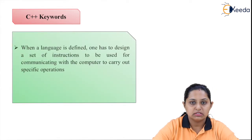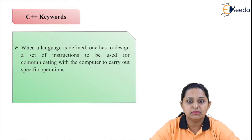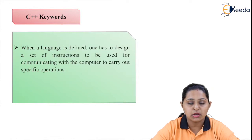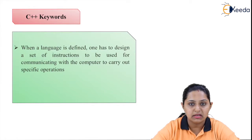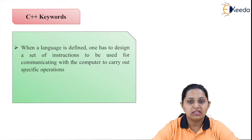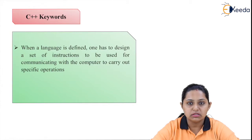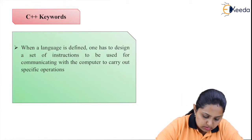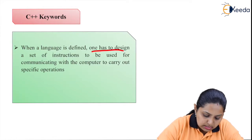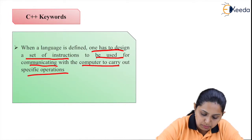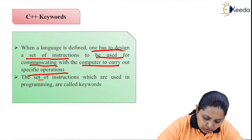Basically, what do you mean by Keywords? Keywords are the reserved words. Reserved words means the words which are already explained to the compiler — already fixed with the compiler — and the meaning of those words are already defined to the compiler. That means you cannot specify a different meaning to those names. One has to design a set of instructions to be used for communicating with the computer to carry out specific operations, and those set of instructions are called keywords.